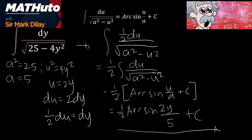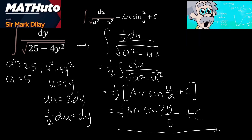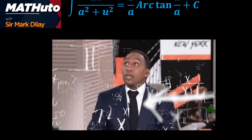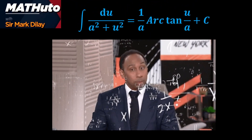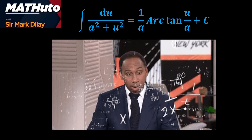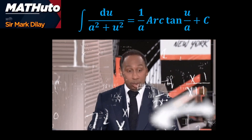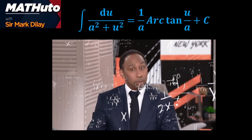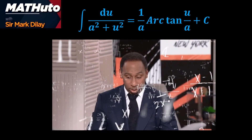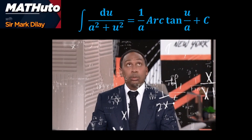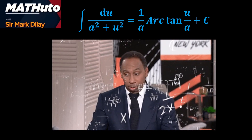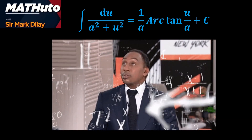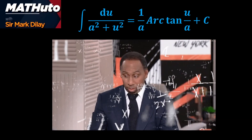Or, (1/2) sin raised to negative 1 of (2y/5) plus C. Let us solve our second formula. The integral of du over a² plus u² equals (1/a) arctan(u/a) plus C. This formula has no radical sign in the denominator.